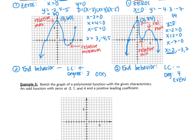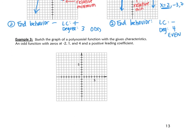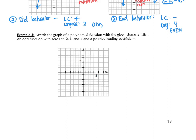Let's look at example 3. In this case, we're not given an equation. We just need to sketch. Sketch the graph of a polynomial function with the given characteristics: an odd function with zeros at -2, 1, 4, and a positive leading coefficient.